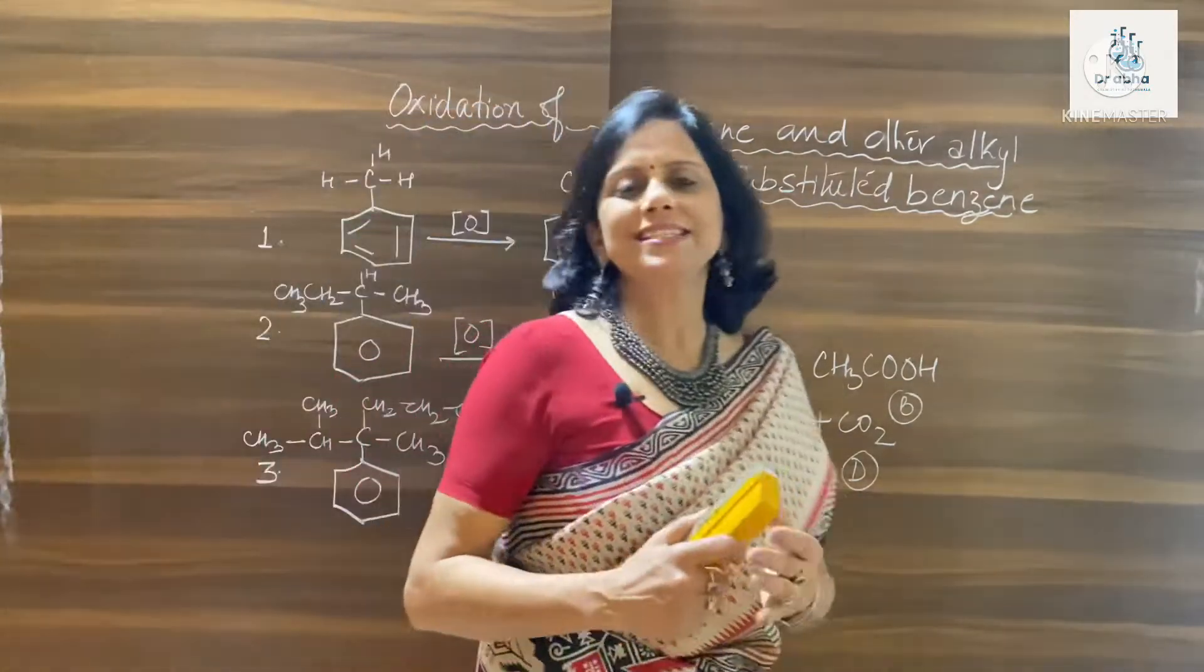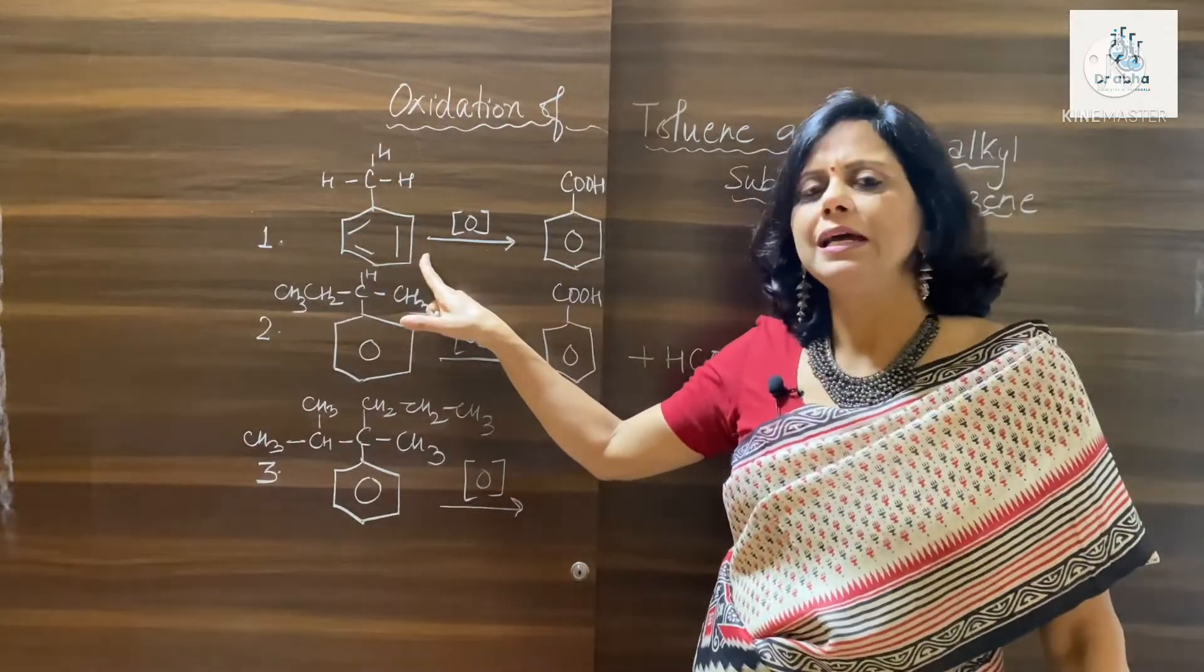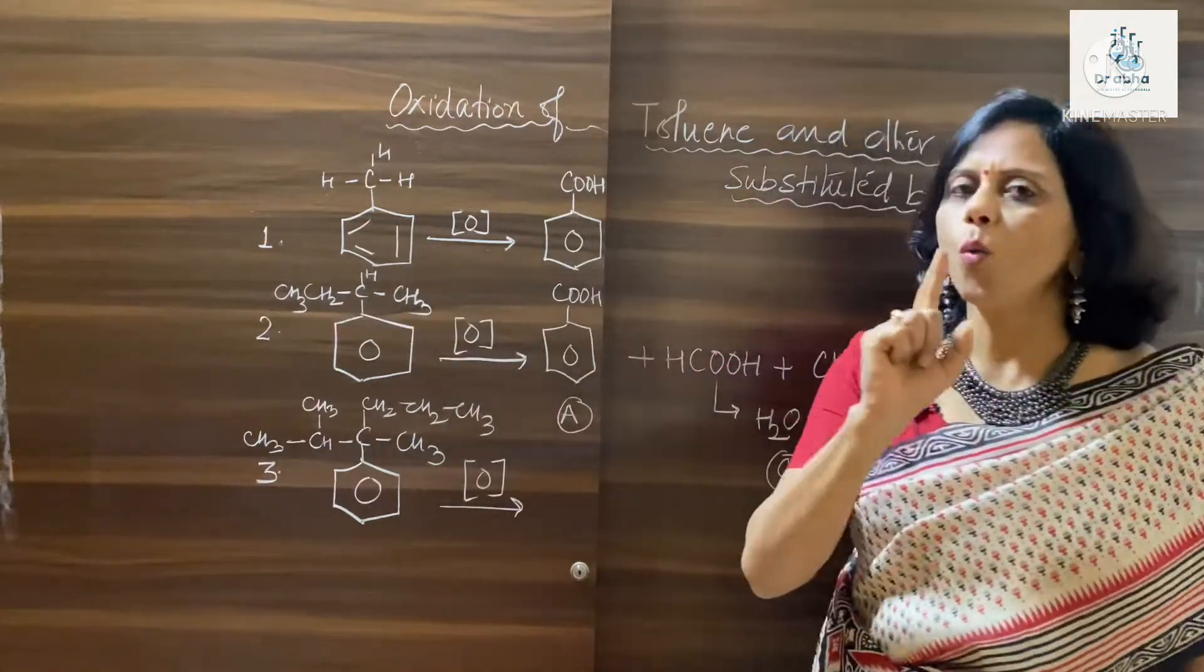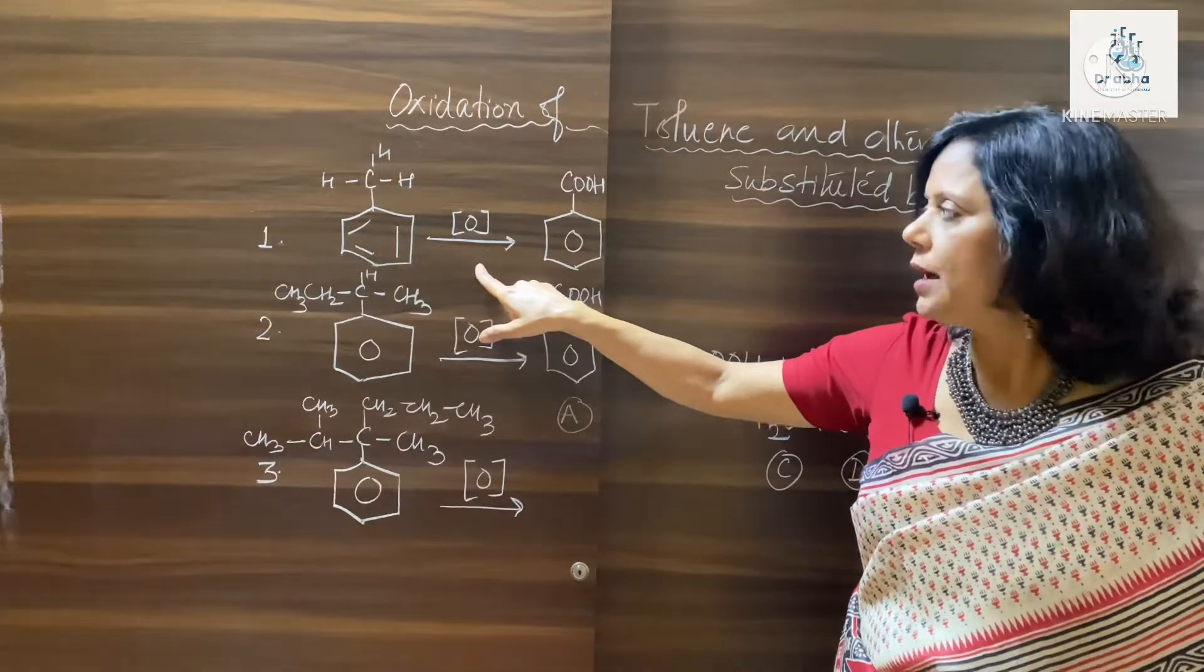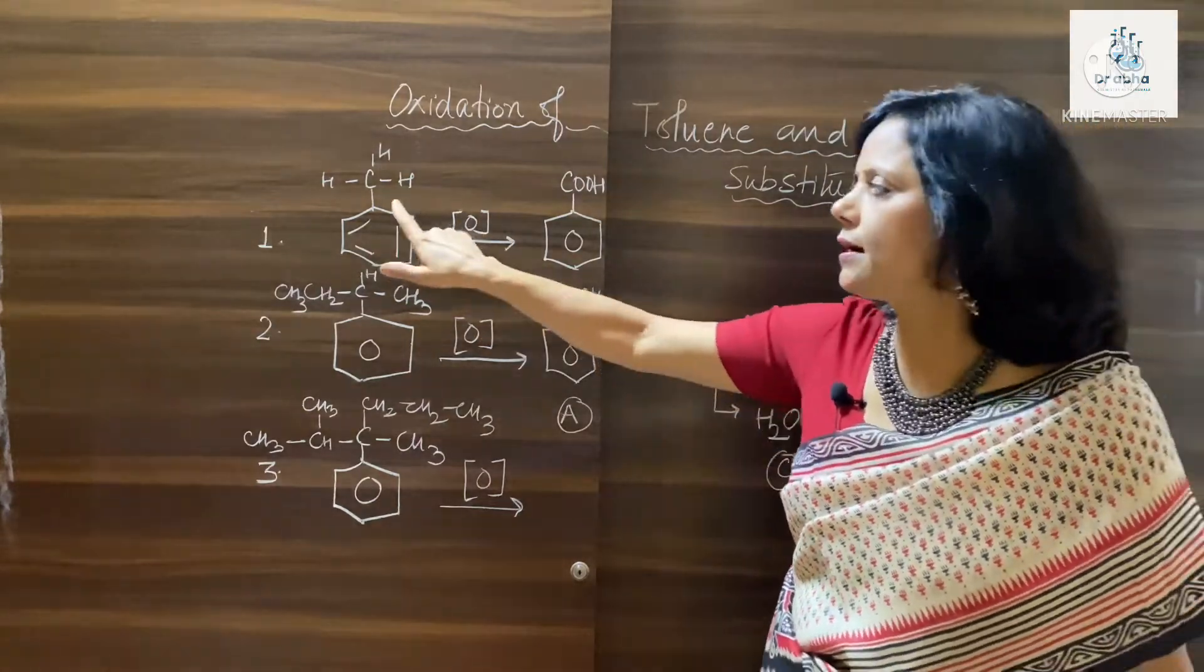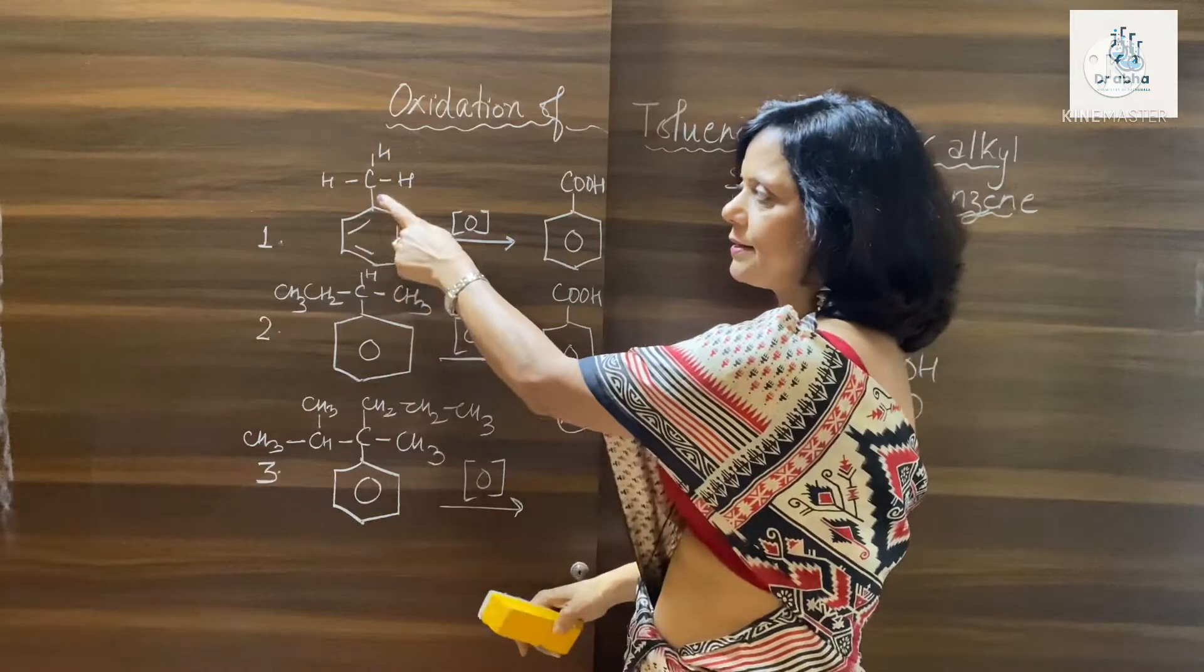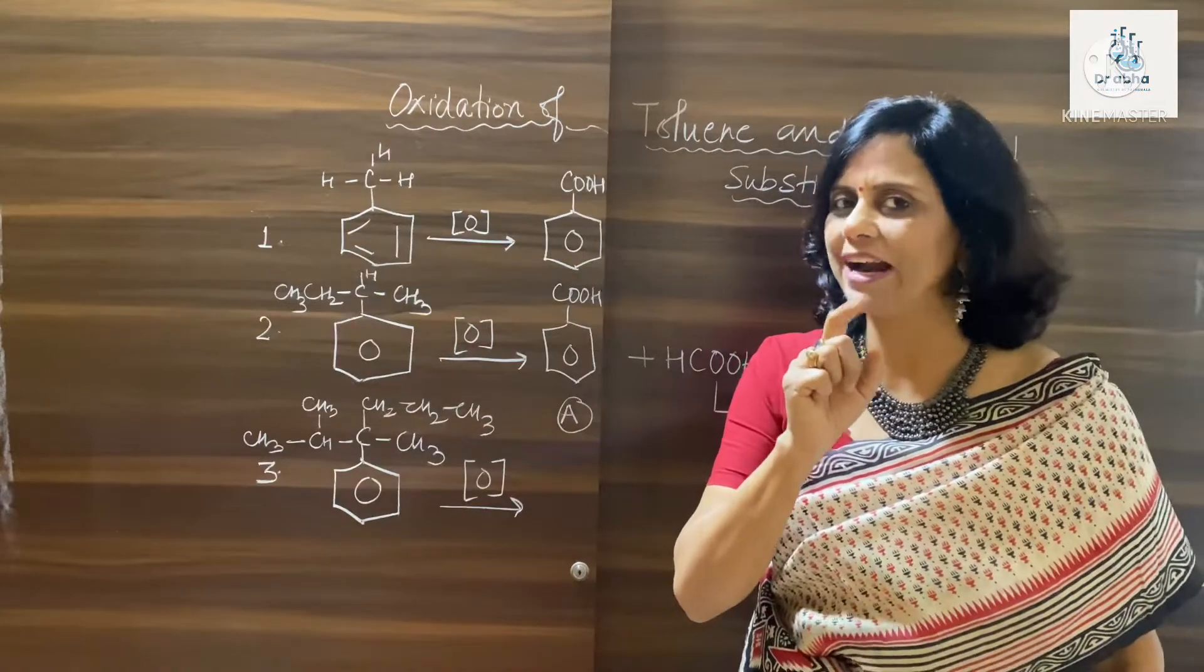So class, let's get started with the simplest methylated benzene, that is toluene. Now when we take an oxidizing agent something like KMnO4, what we have to ensure is that the carbon which is attached to the benzene ring, the carbon which is attached to the benzene ring, that is the point of attack.